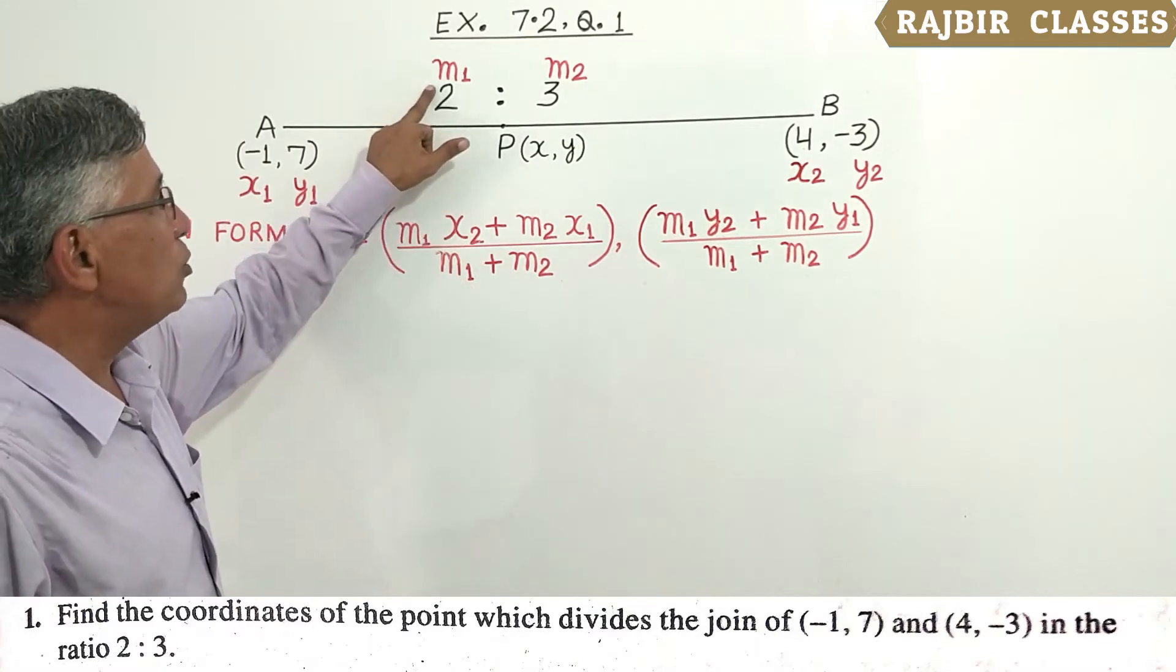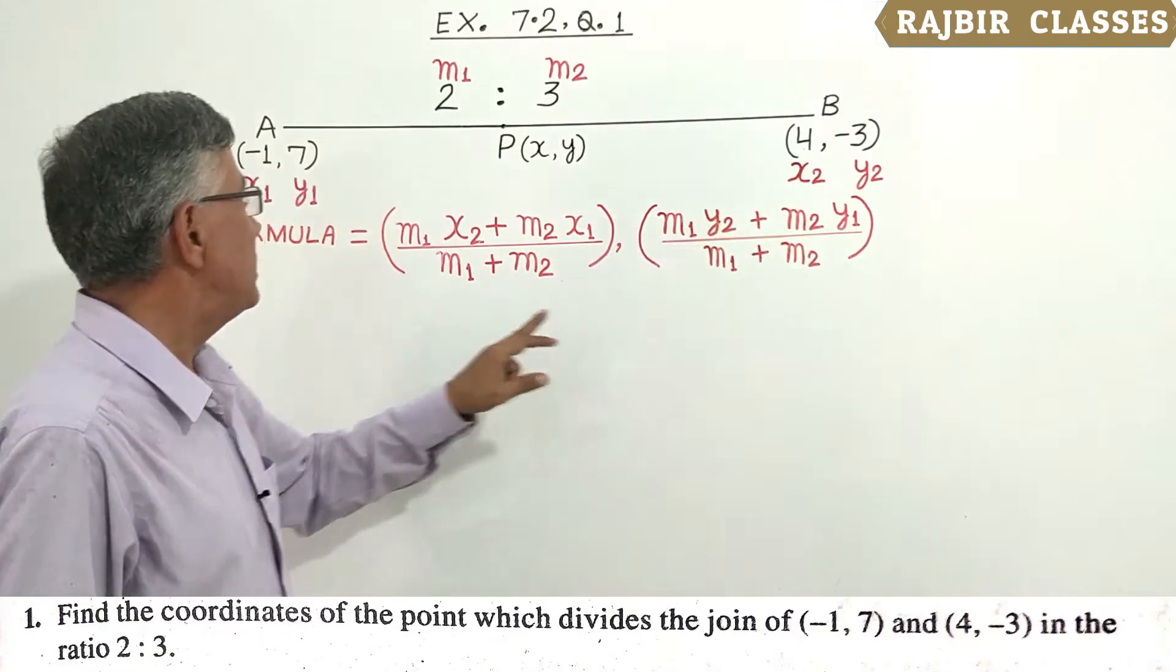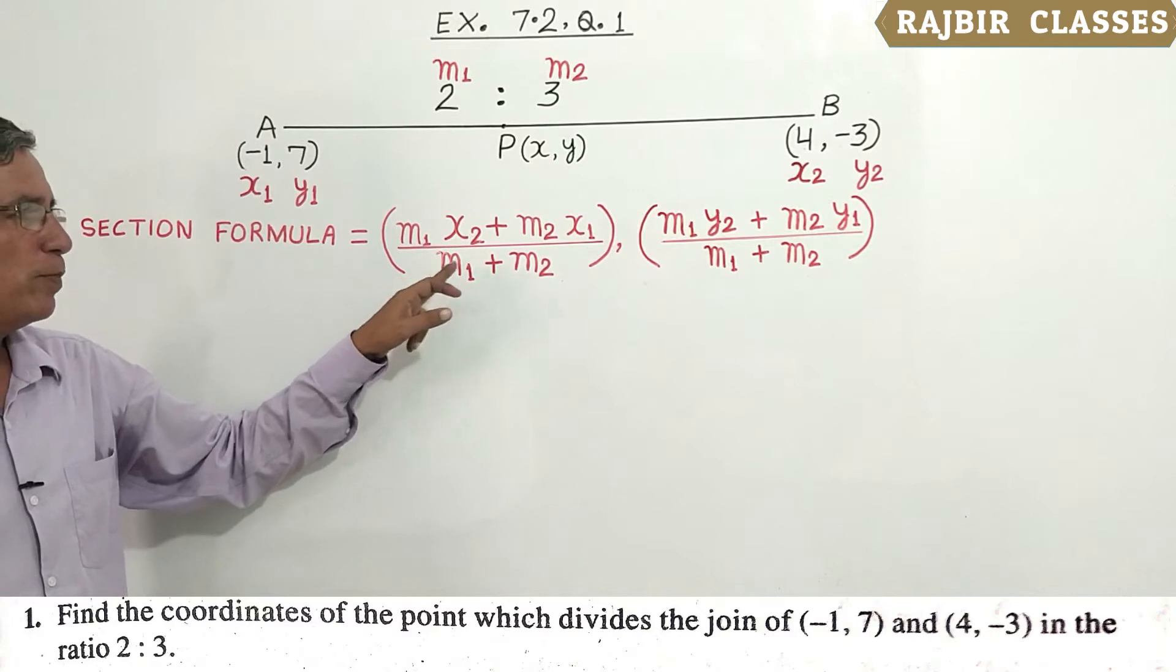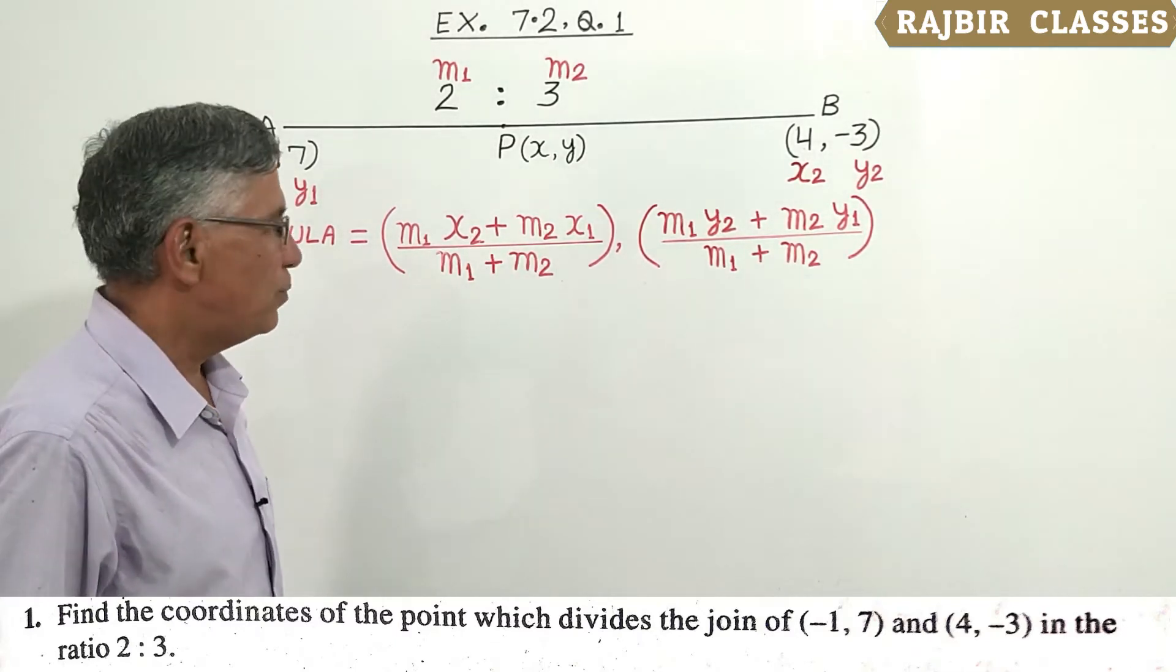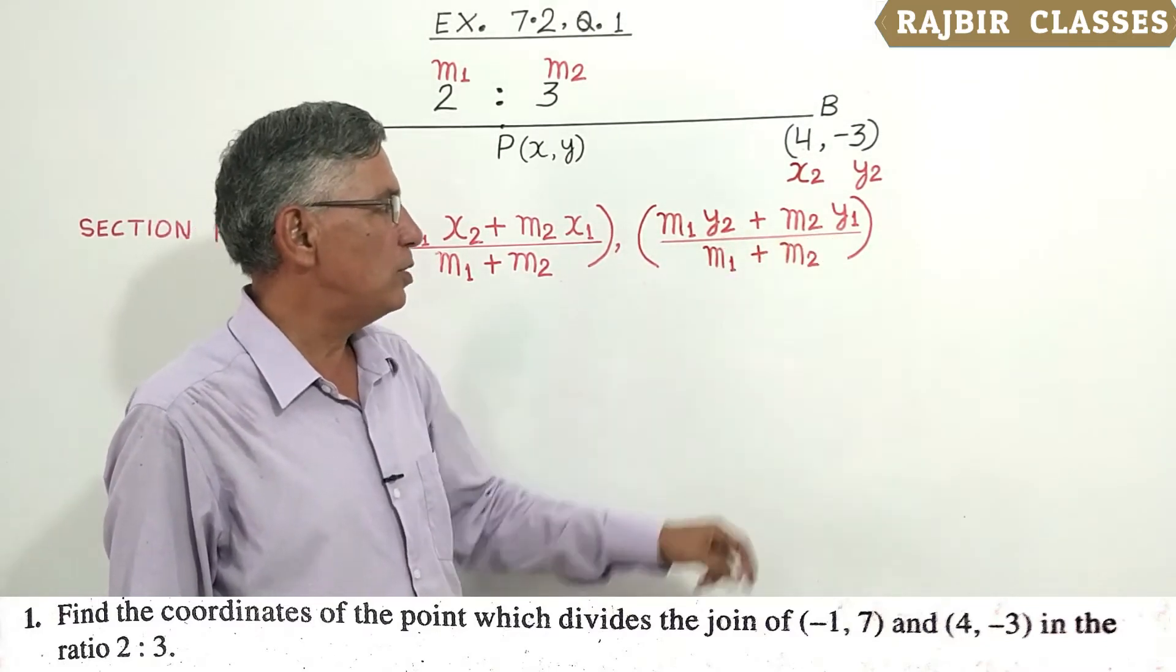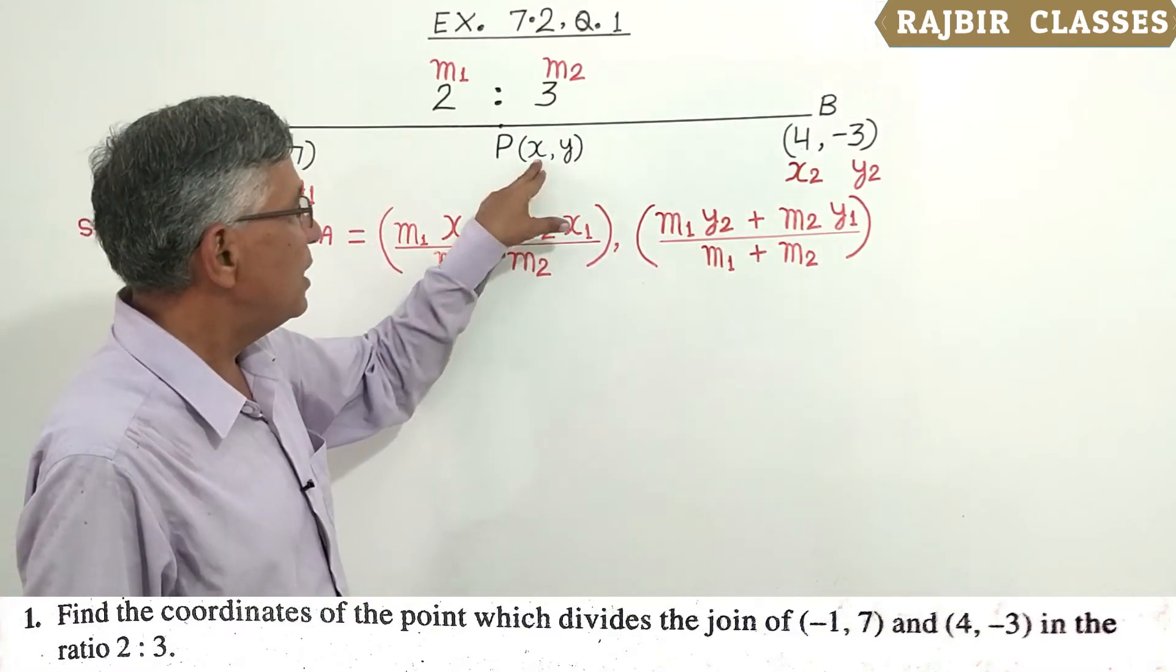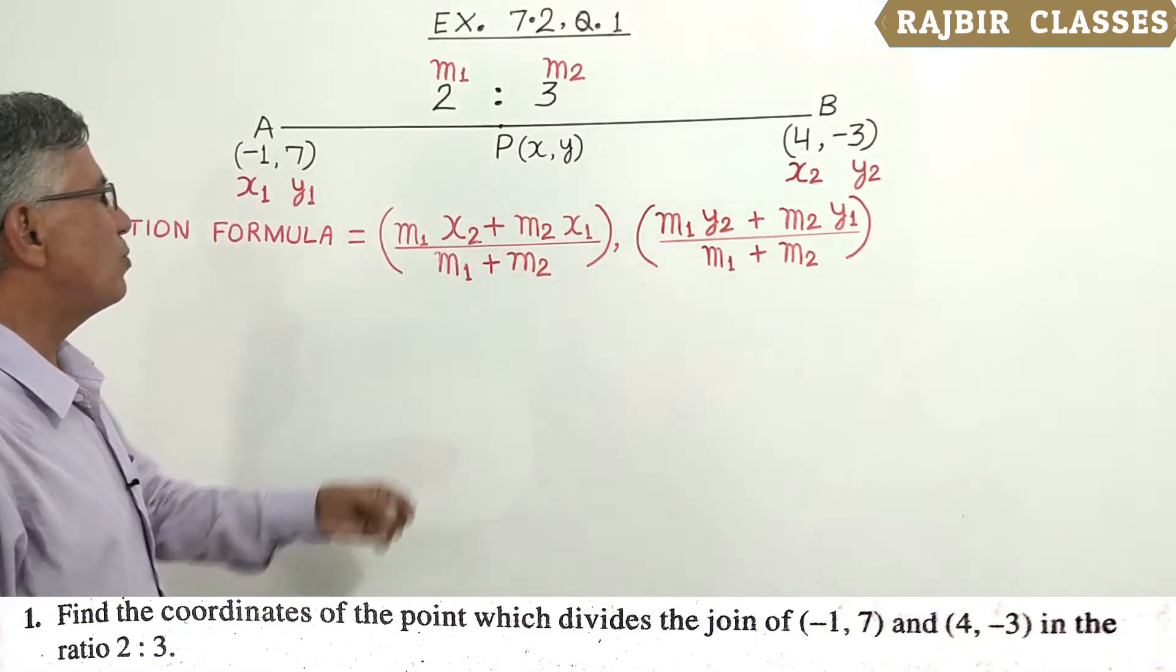With M1=2 and M2=3, we use the section formula. The x-coordinate equals (M1·X2 + M2·X1)/(M1+M2), and the y-coordinate equals (M1·Y2 + M2·Y1)/(M1+M2).